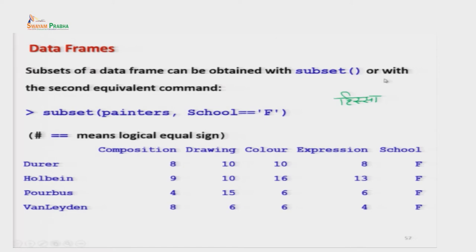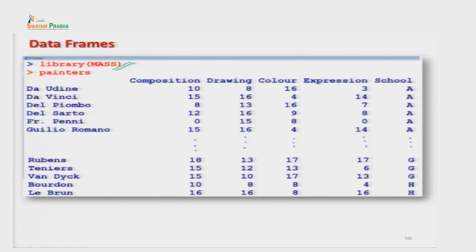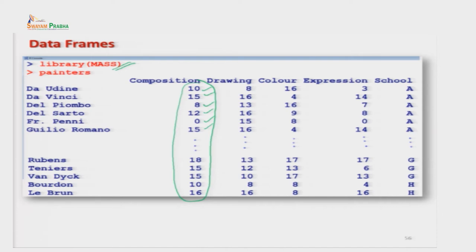इस data set में से हमारे पास भिन्न-भिन्न तरह के सवाल उठ सकते हैं। जैसे composition की बात करें तो इसमें 10, 15, 8, 12, 0, 15 जैसे नंबर हैं। अगर हमको ऐसे painters के नाम निकालने हैं जिनके लिए composition किसी value के ऊपर होनी चाहिए, या जिनके लिए expression की value 0 है - ऐसी जानकारी निकालना हमारा लक्ष्य है।